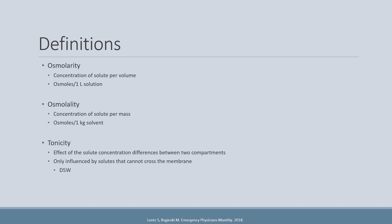When we talk about fluid resuscitation, these definitions are very similar because one liter of water has a mass of one kilogram. Tonicity is much different than osmolarity or osmolality because tonicity is the effect of the solute concentration difference between two compartments — in fluid resuscitation, those two compartments being the intra- and extracellular compartments.